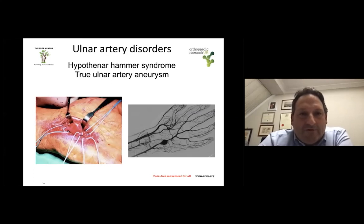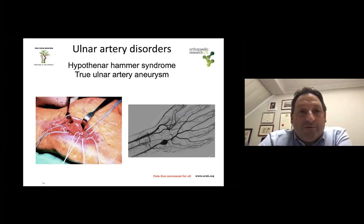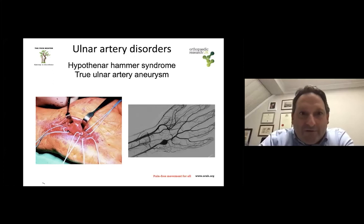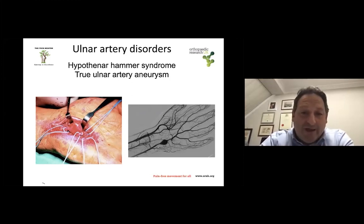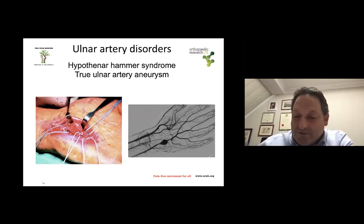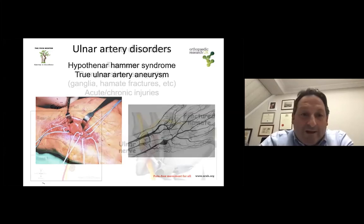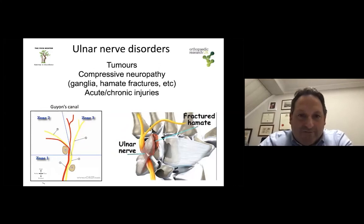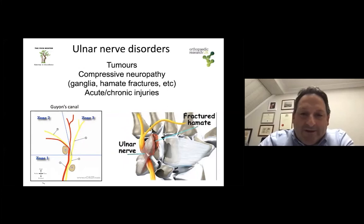We're talking about ulnar-sided wrist pain, not only bony or tendinous disorders. Another potential cause — not that common but not uncommon — is the hypothenar hammer syndrome. This is usually associated with manual activities, especially repetitive or microtrauma to the ulnar aspect of the wrist and palm of the hand. It is a true ulnar artery aneurysm that you should treat as such — it can be resected and the ulnar artery ends either joined together or reconstructed with a vein graft if they don't reach. This is also a potential cause of ulnar-sided wrist pain.